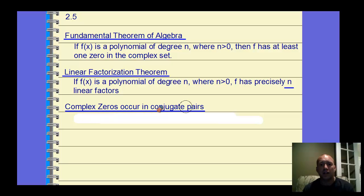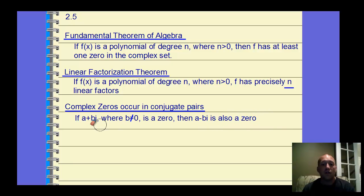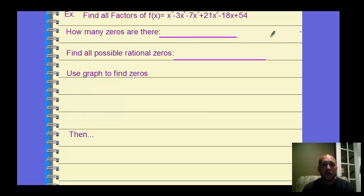Complex zeros occur in conjugate pairs. So if a plus bi, where b is not 0 — meaning you have an imaginary portion — is a zero, then you automatically know that a minus bi is also a zero. If you have some imaginary solution, its conjugate will also be a zero. That's a huge one to help us write polynomials.